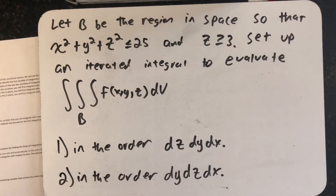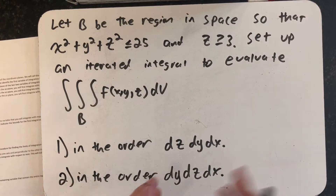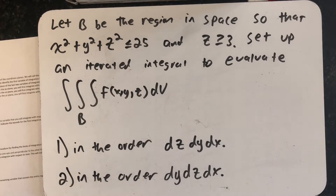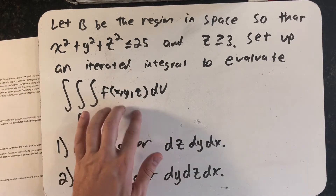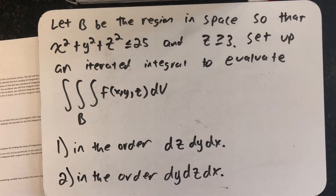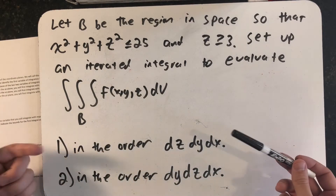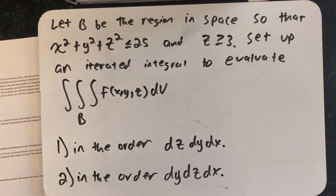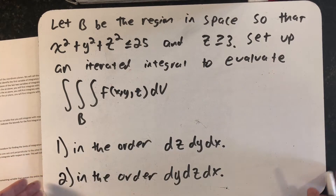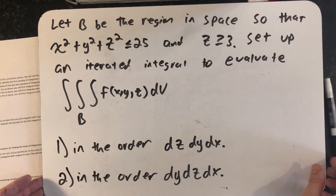B is the region in space where x squared plus y squared plus z squared is less than or equal to 25 — all points inside the sphere of radius 5 centered at the origin and on its surface — but only where z is greater than or equal to 3. We need to set up an iterated integral to evaluate a triple integral, first using the order dz dy dx, and secondly using dy dz dx. Any of the six possible arrangements would be valid, so we're only doing two of them.